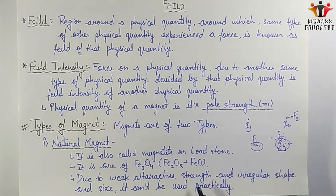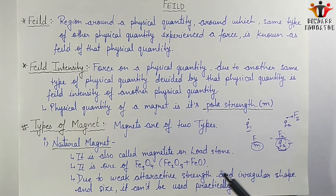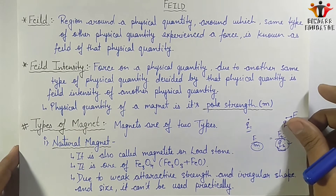Natural magnets cannot be used practically due to their weak attractive strength and irregular shape and size. Because they are irregularly shaped, we cannot get a uniform magnetic field around them, and the field itself is weak. So they are not practically useful.